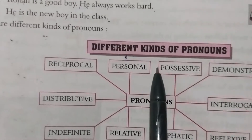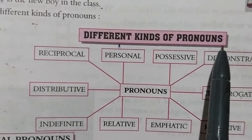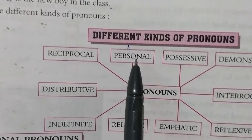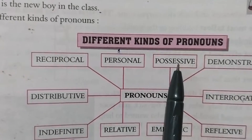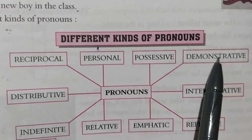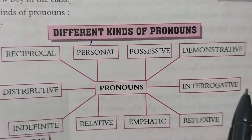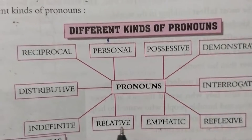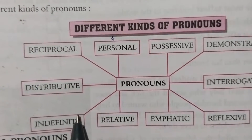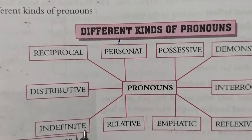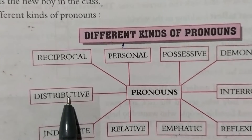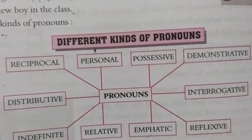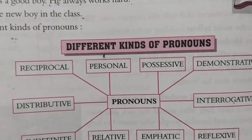Now students, different kinds of pronouns — alag alag prakar ke pronouns hain. Number one: Personal pronoun. Number two: Possessive pronoun. Number three: Demonstrative pronoun. Number four: Interrogative pronoun. Number five: Reflexive pronoun. Number six: Emphatic pronoun. Number seven: Relative pronoun. Number eight: Indefinite pronoun. Number nine: Distributive pronoun. Number ten: Reciprocal pronoun.